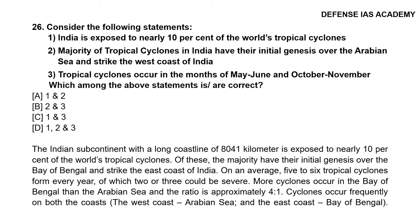Question 26: Consider the following statements: 1. India is exposed to nearly 10% of the world's tropical cyclones; 2. Majority of tropical cyclones in India have their initial genesis over the Arabian Sea and strike the west coast; 3. Tropical cyclones occur in the months of May to June and October to November. The correct option is option C, 1 and 3. The Indian subcontinent with a coastline of 8,041 km is exposed to nearly 10% of the world's tropical cyclones. The majority have their initial genesis over the Bay of Bengal and strike the east coast. On average, 5 to 6 tropical cyclones form every year, of which 2 or 3 could be severe. More cyclones occur in the Bay of Bengal than the Arabian Sea in a ratio of approximately 4 to 1.